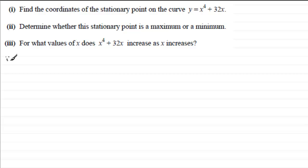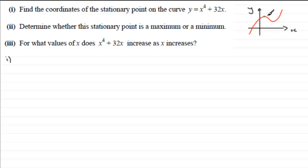In part 1 we've got to find the coordinates of the stationary point for the curve y equals x to the power 4 plus 32x. Remember that on any curve, at stationary points the gradient given by dy/dx equals zero. That's our starting point — we differentiate the curve to get the gradient in general, then set dy/dx equal to zero and solve for x.